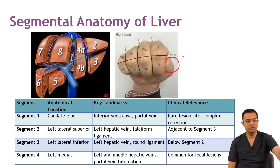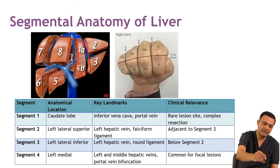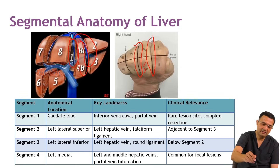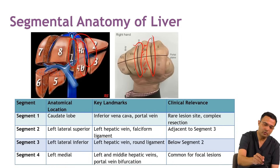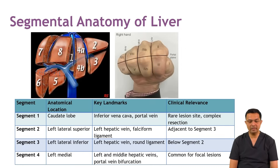Looking at the picture carefully, the question mentions that the lesion is between the middle hepatic vein and the left hepatic vein — that is Segment 4. You can appreciate that Segment 4 is above the portal vein bifurcation.